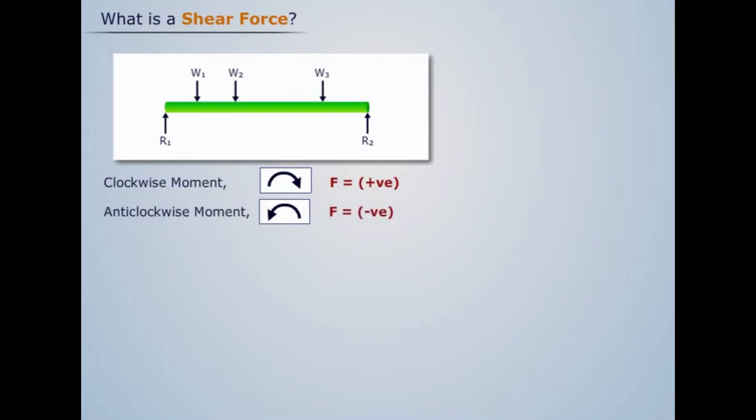Let us take an example to understand algebraic sum. Take a section X-X at any arbitrary distance. The algebraic sum of all the vertical forces acting on the left side of the section will be F1 = R1 - W1 - W2.